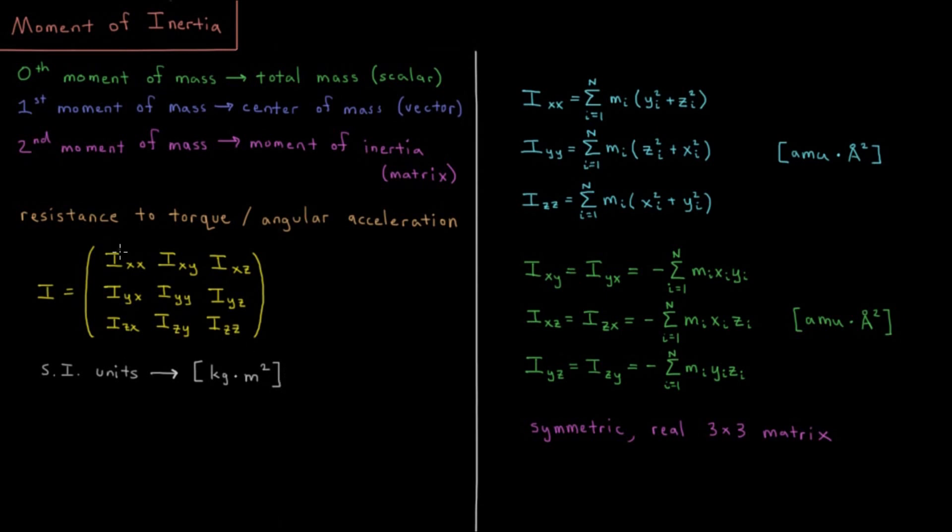We have two different sets of rules here. We have the diagonal elements, Ixx, yy, and zz. And then we have our off-diagonal elements, Ixy, xz, yz, and their complements on the other side.